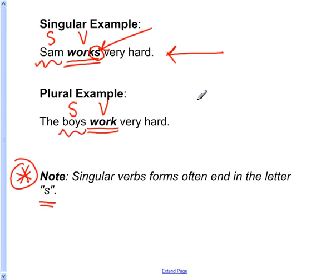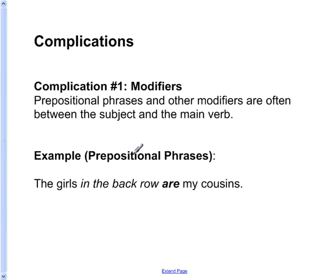Now, this is a fairly easy concept, but there are complications — five of them to be exact. Let's look at complication number one: modifiers. Prepositional phrases and other modifiers are often between the subject and the main verb, and these modifiers between the subject and main verb can make it difficult to identify what the subject actually is.